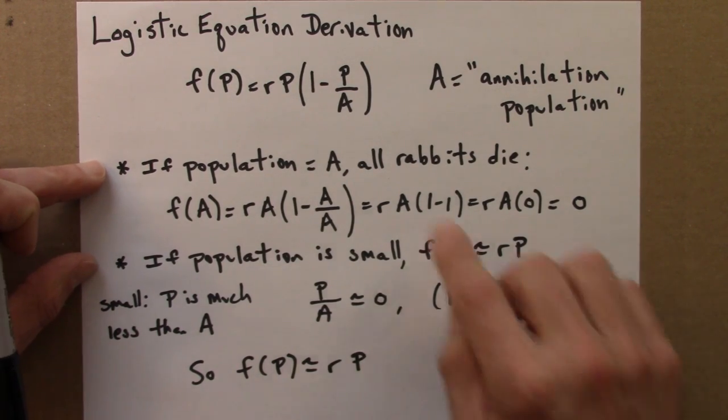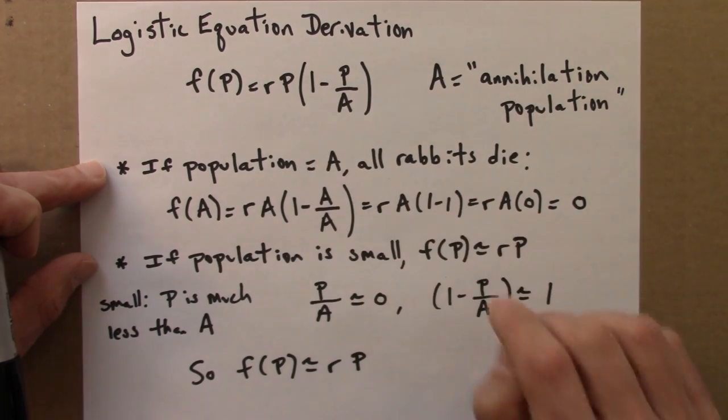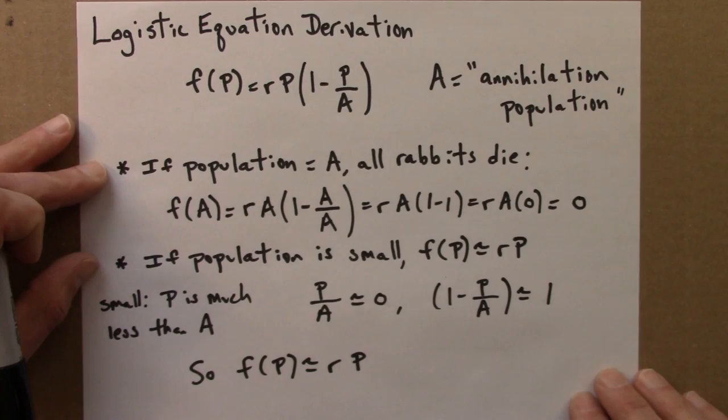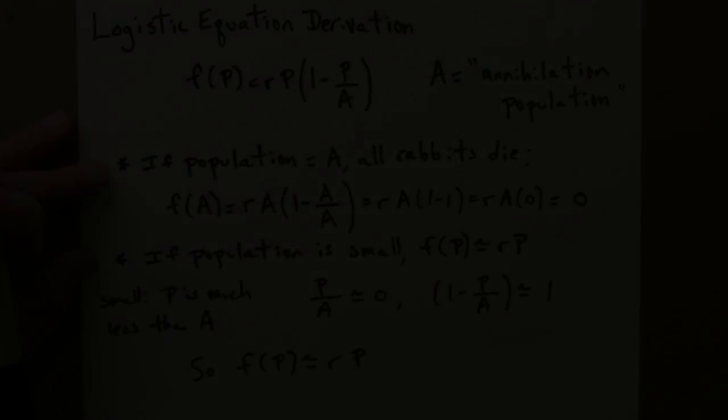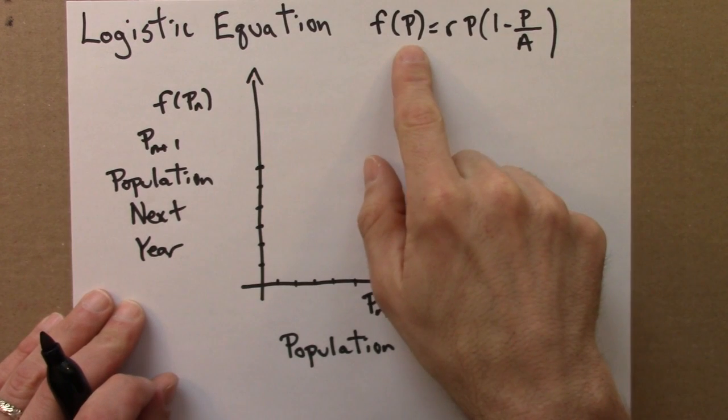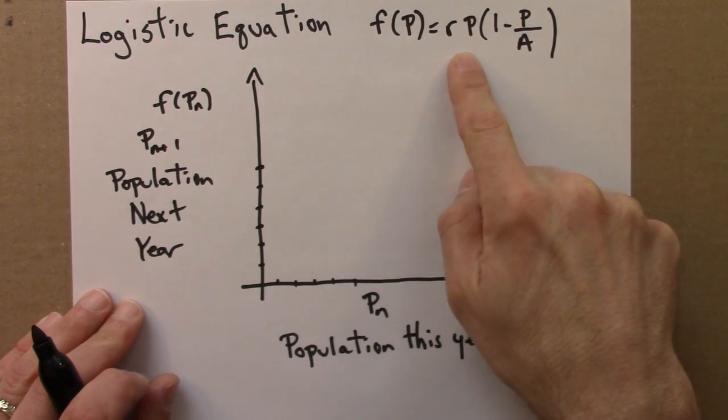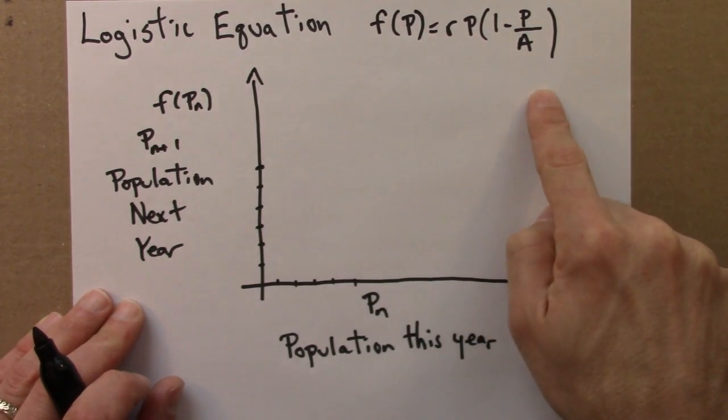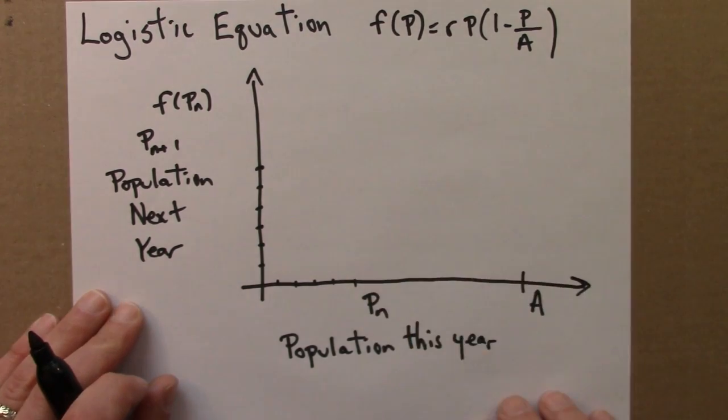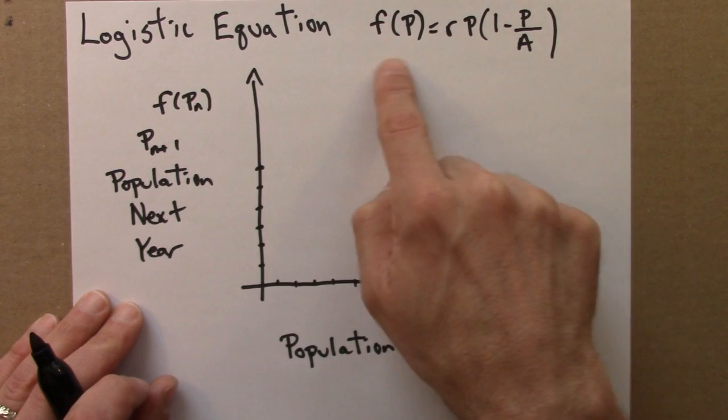So next, I'll plot this equation. I'll plot this function of p and we'll interpret it graphically. So the logistic equation is in this form, f of p is rp times 1 minus p over a. And this equation, when iterated, would describe the growth of a population. So the idea is, down here, I'm going to plot this function.